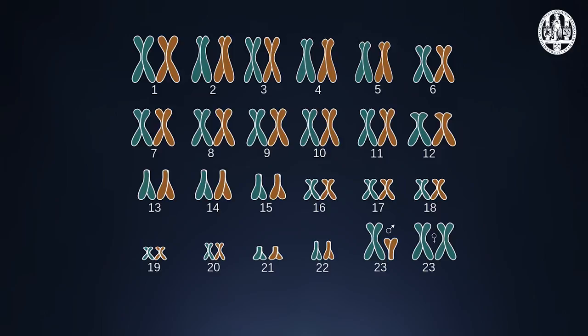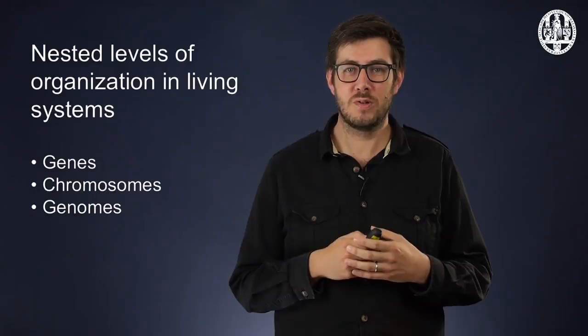Among this set of chromosomes is also a pair of sex chromosomes, which is not identified by a number, but usually with letters. In many species, the letters used are X and Y. If you have an X and a Y, you are biologically male. If you have two X's, you are biologically female. The total set of genes across all chromosomes is called the genome.